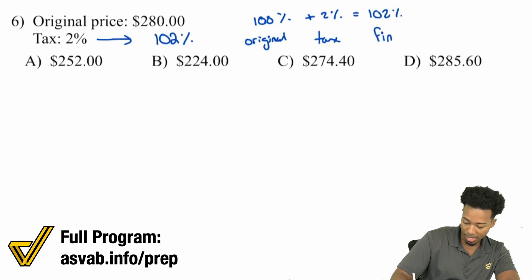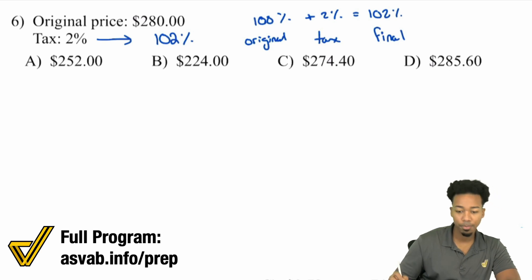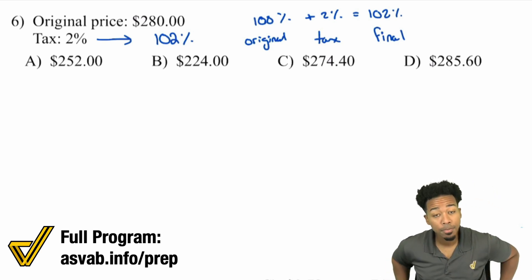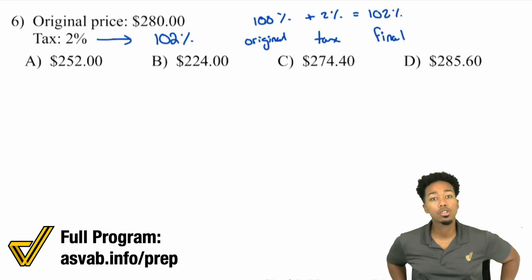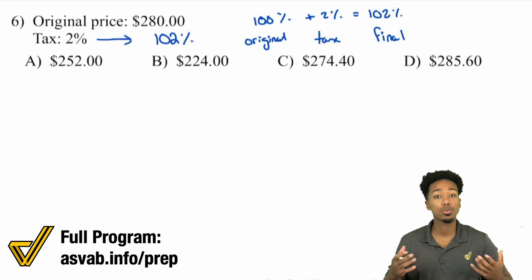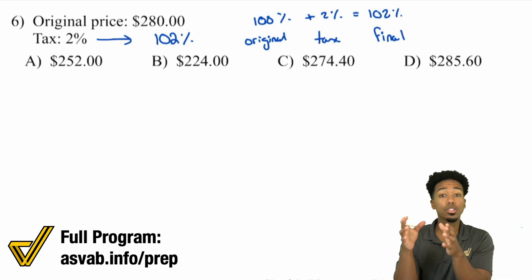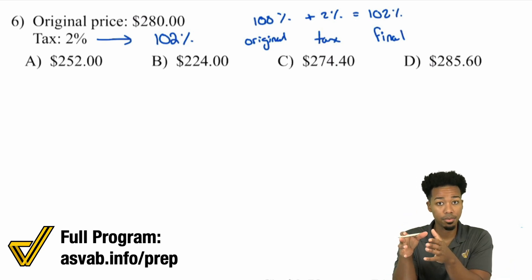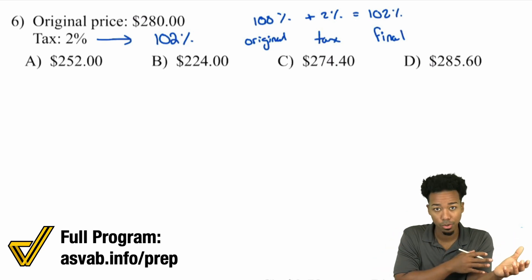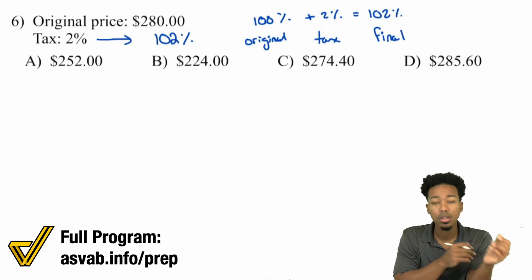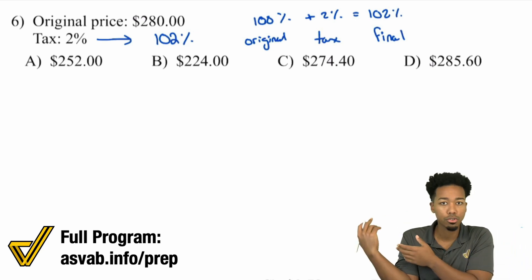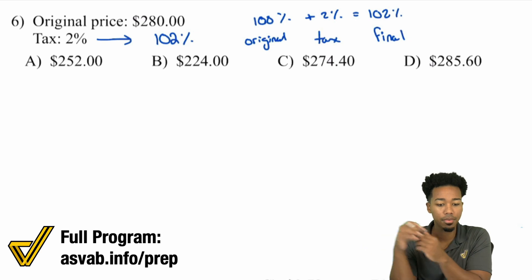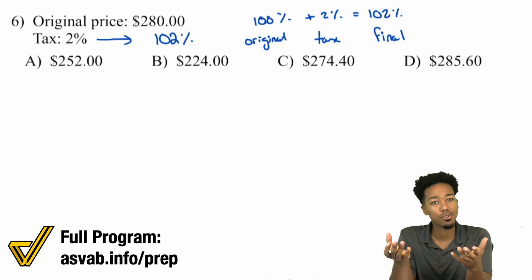There are two main ways to calculate this. One: you can calculate the 2% by itself and then add it back to the original price. Or two: you find 102% of $280 and you're done right away. I'll show you both methods.